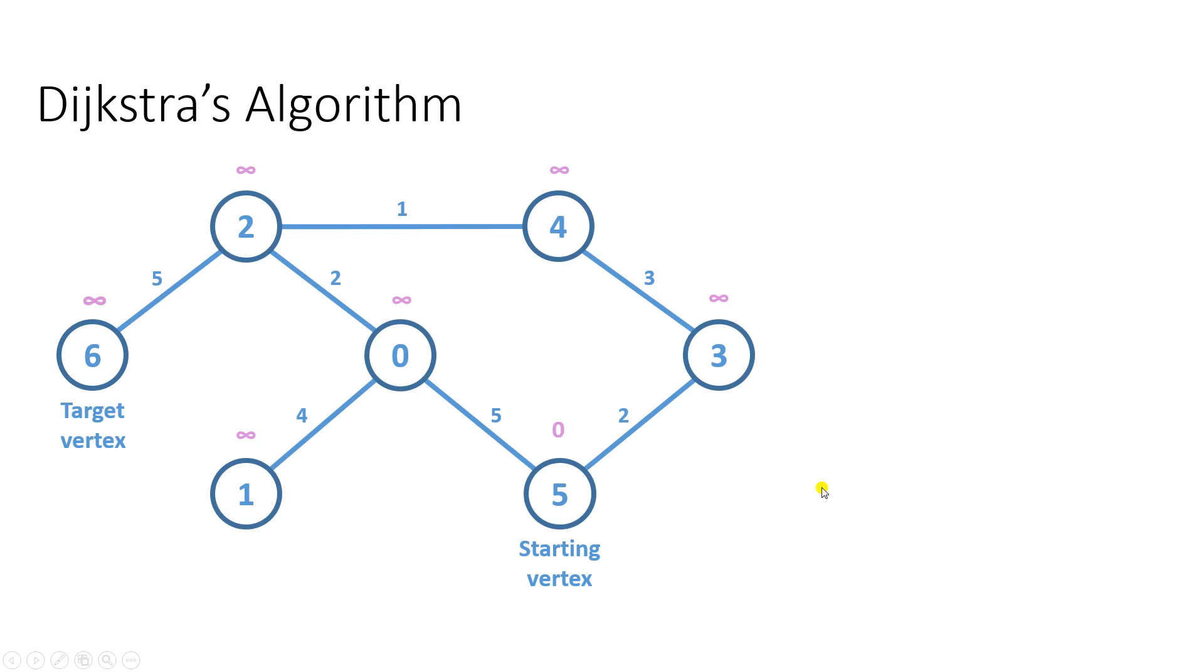Contrary to the best first search algorithm where priority of a visited vertex is estimated by the heuristic function, Dijkstra's algorithm exactly determines the priority of a visited vertex by assigning it the lowest cost. This cost is calculated as the sum of edge weights between the starting vertex and the visited vertex. The algorithm will reduce the cost of a visited vertex by an update if it finds an alternative path with a lower total weight.